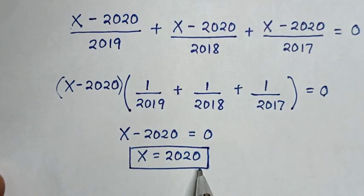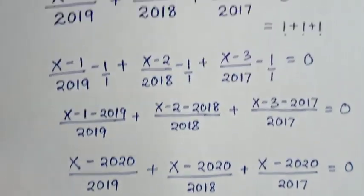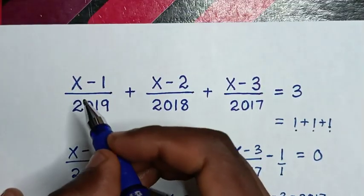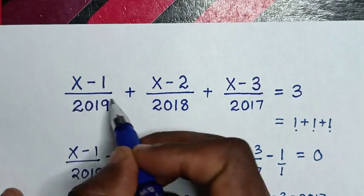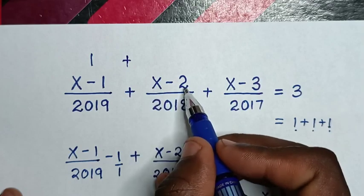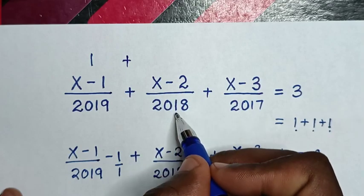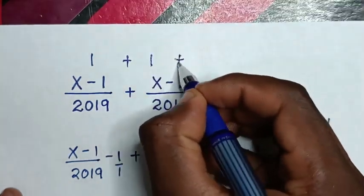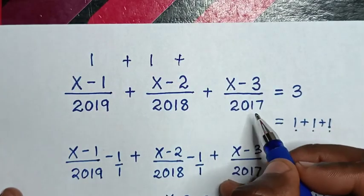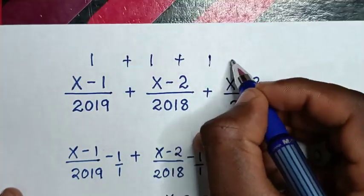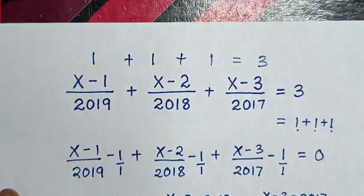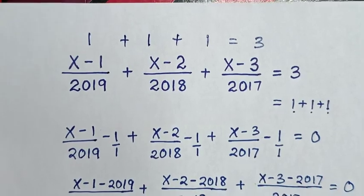Now to check if 2020 is the correct answer: 2020 minus 1 is 2019, divided by 2019 is 1; plus 2020 minus 2 is 2018, divided by 2018 is 1; plus 2020 minus 3 is 2017, divided by 2017 is 1. That equals 3. Left side and right side are equal, so x equals 2020 is confirmed.